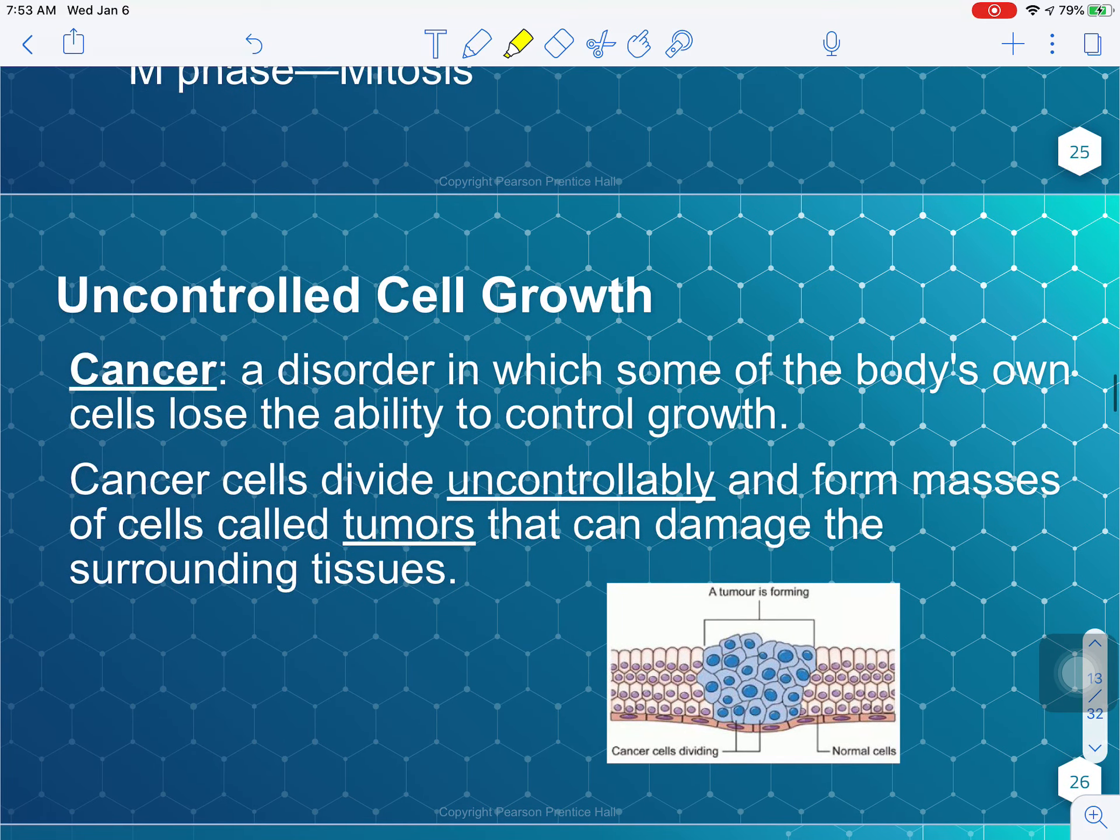The last thing we're going to look at for today is just what happens when cells don't follow the appropriate cues in this cell cycle. And that is when we get uncontrolled cell growth. Uncontrolled cell growth, as a name you probably are more familiar with, is known as cancer. So cancer is a disorder in which some of the cells in the body lose the ability to control their growth and lose the ability to obey those checkpoints after each phase. So the cell goes through G1 phase, checks itself, and then decides to go into S phase. Once S phase is done, checks to make sure it's done correctly, and then it moves into G2 phase. Cancer cells don't have those checkpoints, and they continue to divide uncontrollably, which forms masses of cells that don't need to be there, and we call those masses of cells tumors.